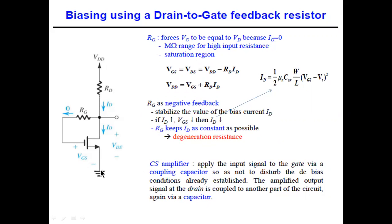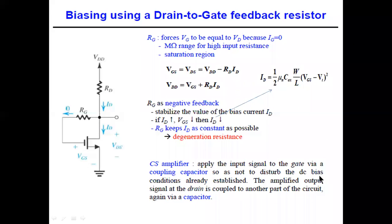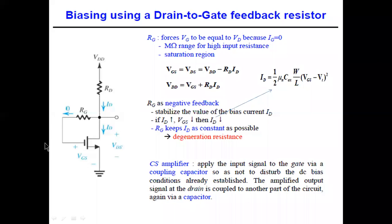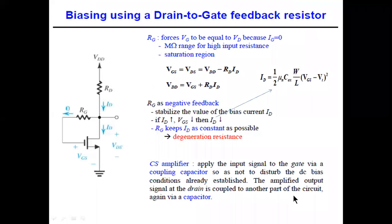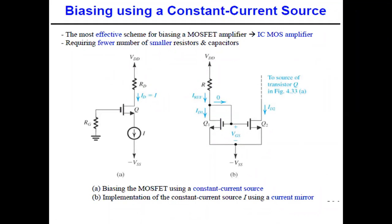This is a common source amplifier configuration. The input signal is applied to the gate via a coupling capacitor so as not to disturb the established DC bias condition. The amplified output at the drain is also coupled to the next stage via another coupling capacitor. Both input and output sides require coupling capacitors.